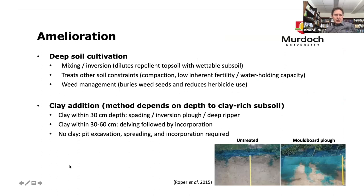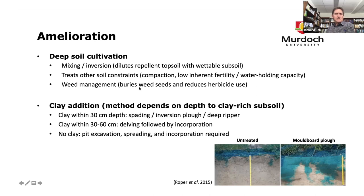For amelioration, deep soil cultivation — mixing, inversion — either dilutes the repellent topsoil or buries it. These soil cultivation treatments are often useful for other purposes simultaneously, such as alleviating compaction, burying herbicide resistant weeds, or incorporating lime. There is quite a large area of deep soil cultivation happening in Western Australia as an area treatment for multiple constraints, including water repellents.